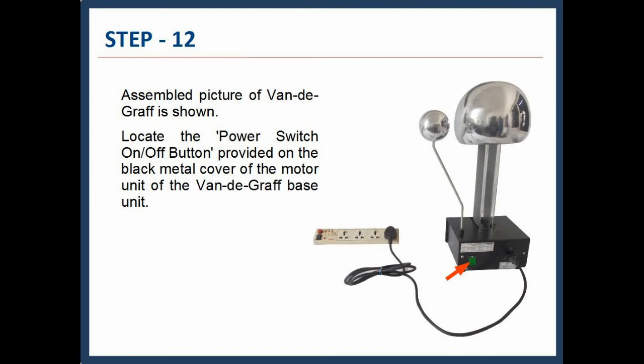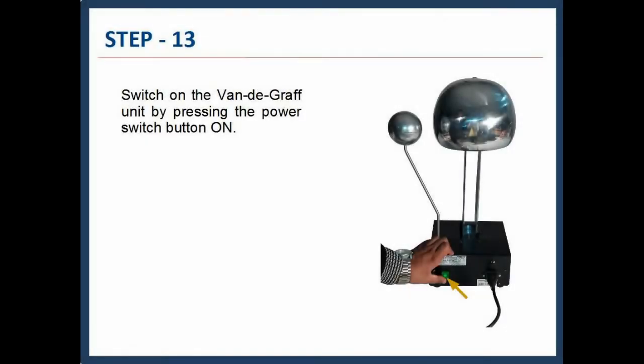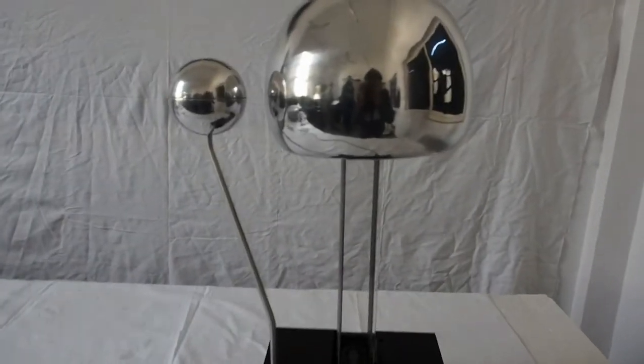Locate the power switch on-off button provided on the black metal cover of the motor unit of the Van de Graaff base unit. Step 13: Switch on the Van de Graaff unit by pressing the power switch button on.